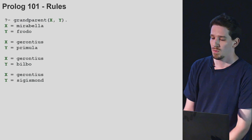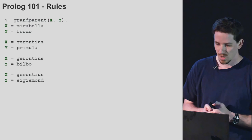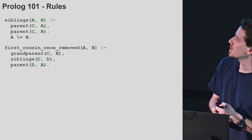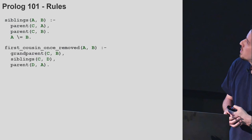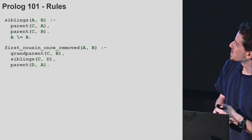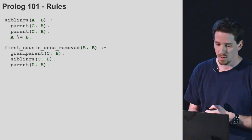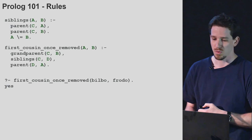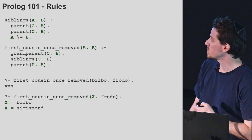If you want to find out what's the relationship between Bilbo and Frodo, we'll need some more rules. Here's an example of a rule called siblings: A and B are siblings if there's a C which is a parent of A and that same C is a parent of B, and A is not equal to B. And now we can define the very intuitive relationship of first cousin once removed. We can query this and see that Bilbo is Frodo's first cousin once removed.